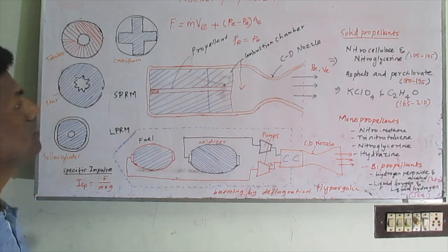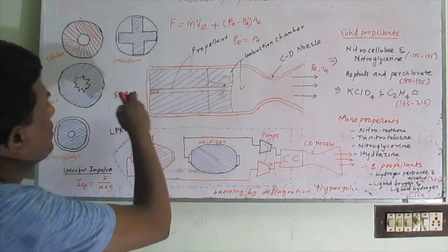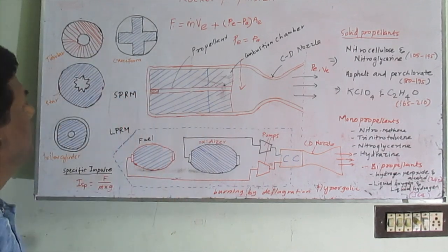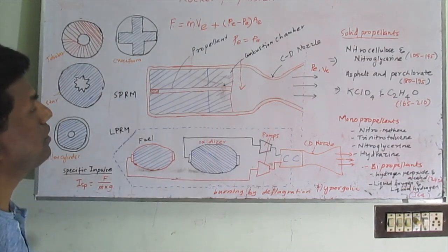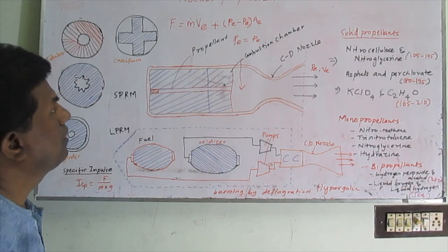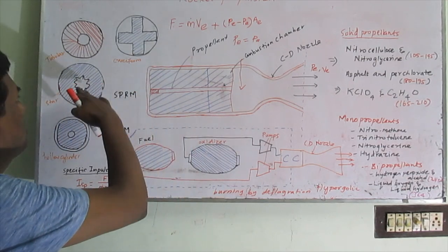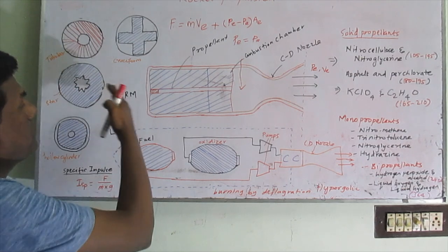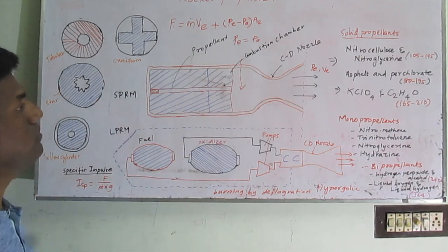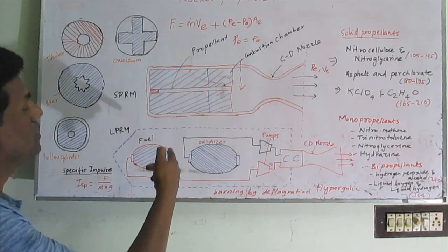The burning rate can be controlled by using the shape and size of the propellants. Burning rate depends upon the size, pattern, and combustion chamber pressure.